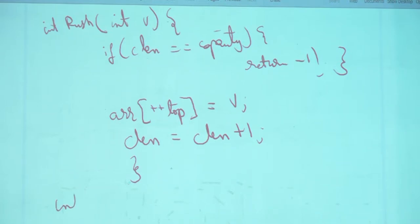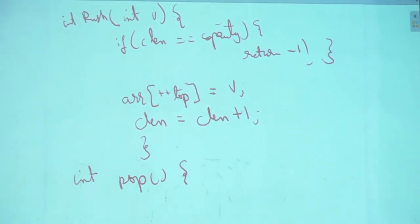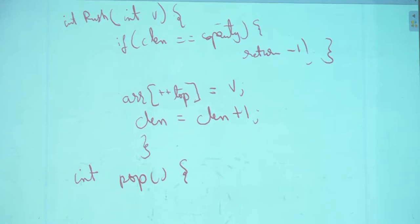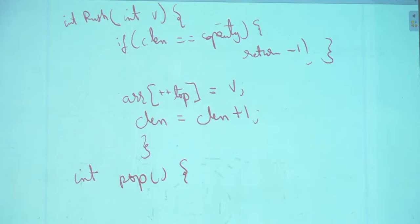Now, int pop. What should pop do? First you have to check whether pop is a legitimate operation. You can check top == -1, or more easily, if cLength == 0 — if cLength equals zero, there is absolutely no element in the stack, so you can't pop.